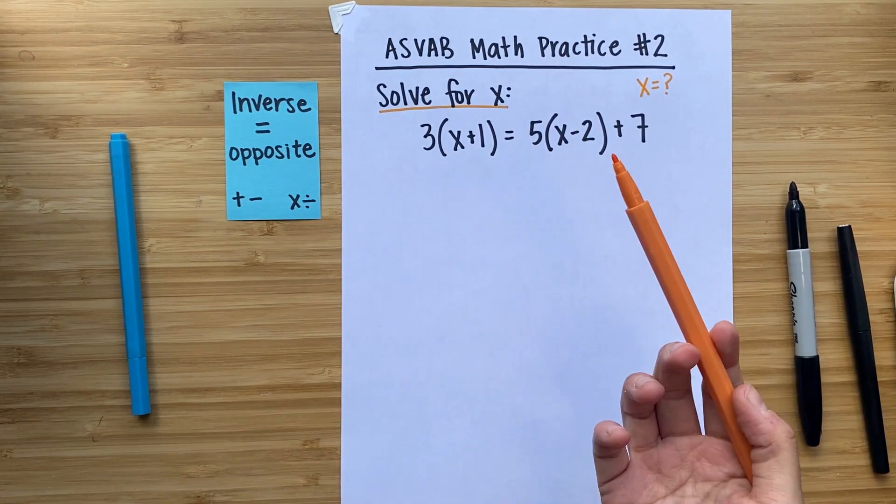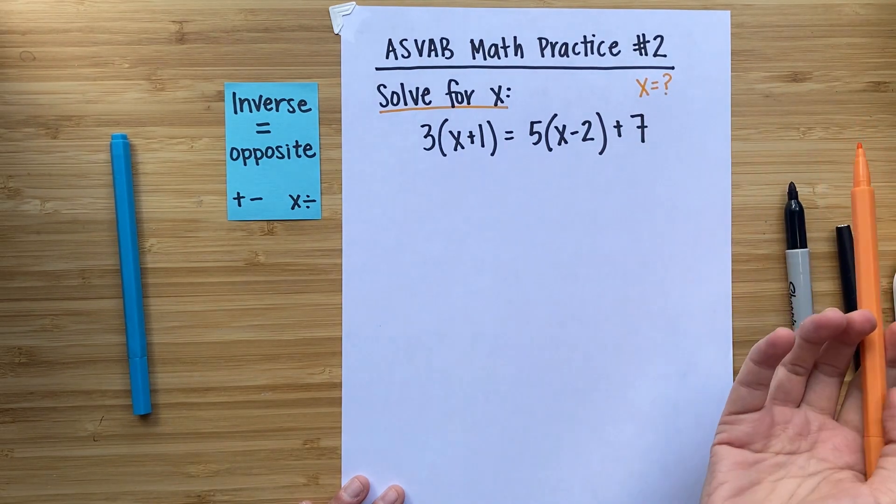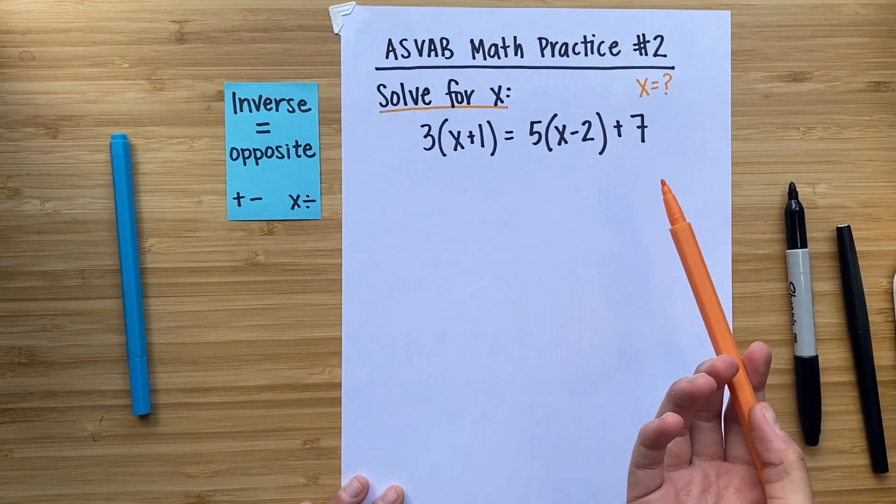To figure that out, basically it means that we need to get x alone on one side of the equal sign and a number on the other side. And that's going to tell us what number is equal to x.